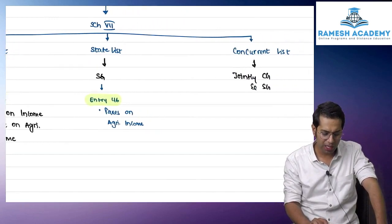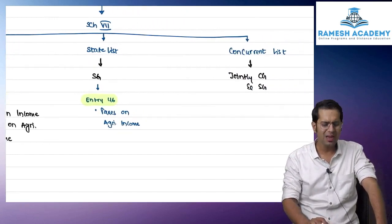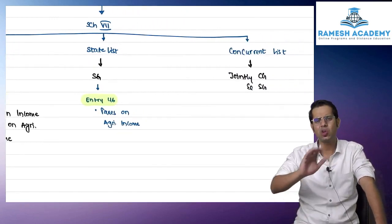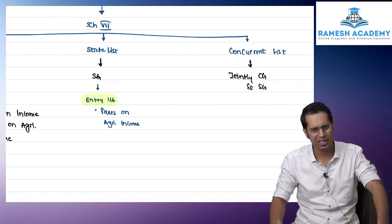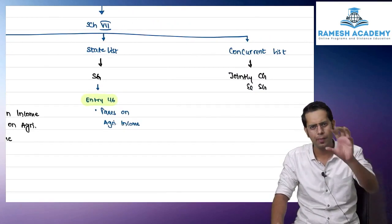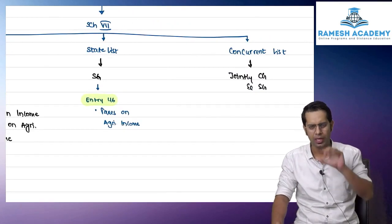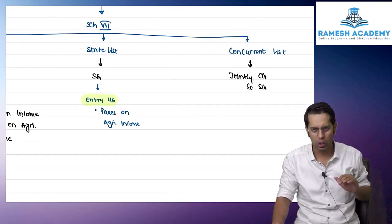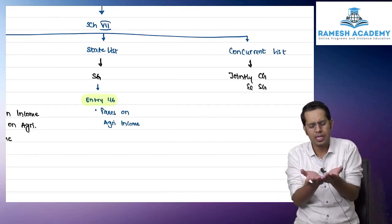In the Union List and the Concurrent List: Concurrent List does not talk about any tax law — it talks about general laws.